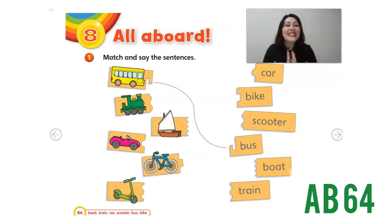Now, activity book, page 64. Match and say the sentences. Look! We have some pictures and we have some words. Now, we need to connect them together.